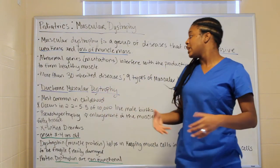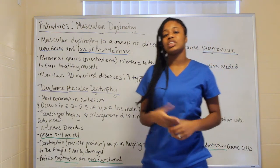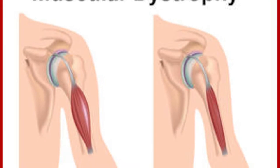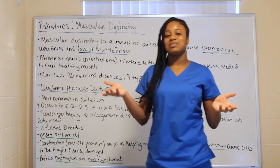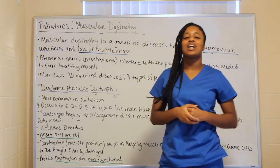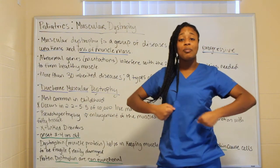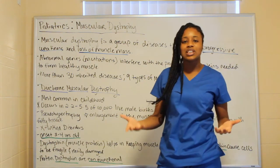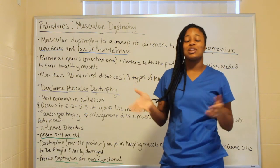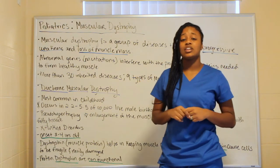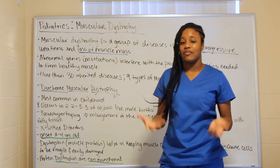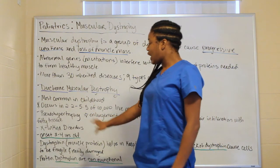One characteristic of muscular dystrophy is pseudohypertrophy — the enlarging of muscles due to an infiltration of fatty tissue. Where you see muscle, it is actually fat. So the muscles look bigger, but they have no real use because it is not muscle tissue in there — it's fatty tissue.